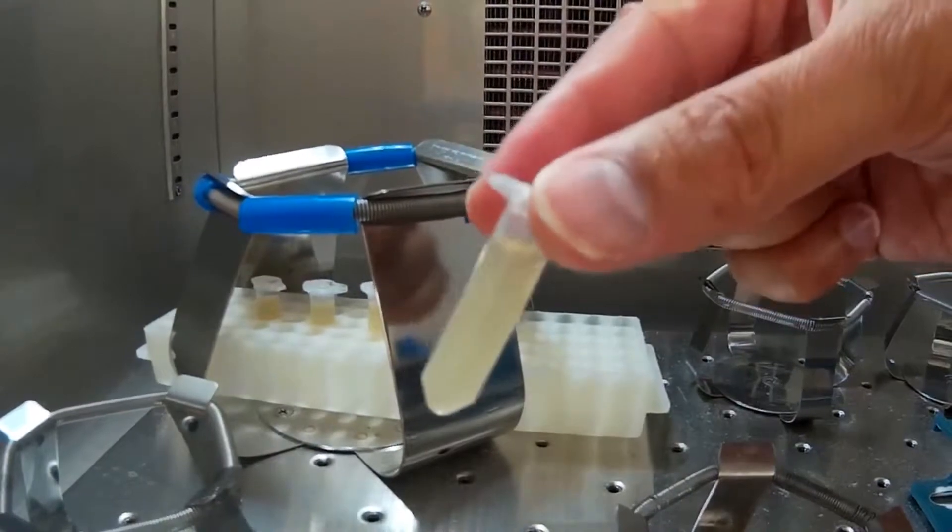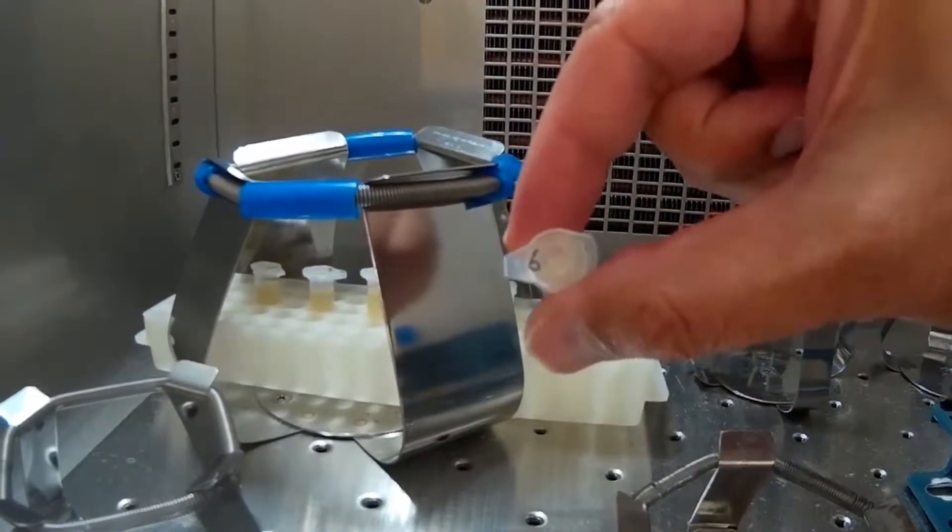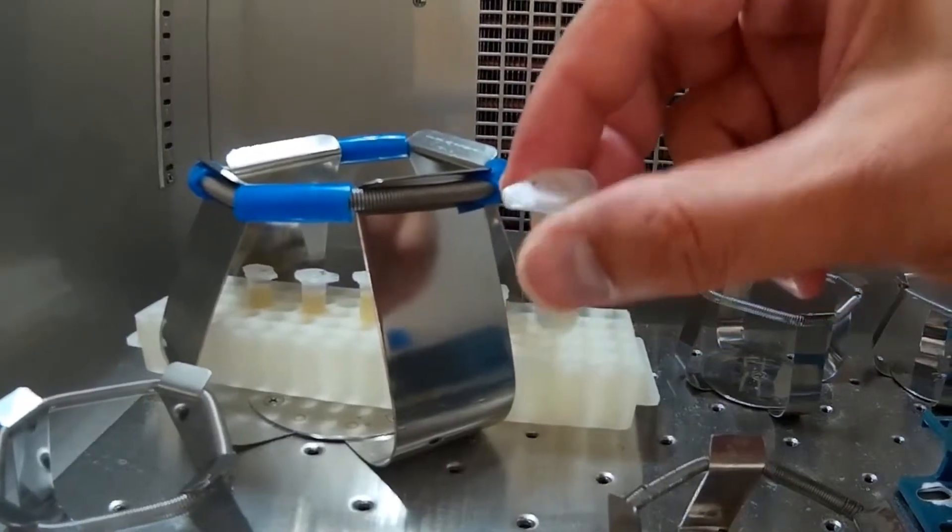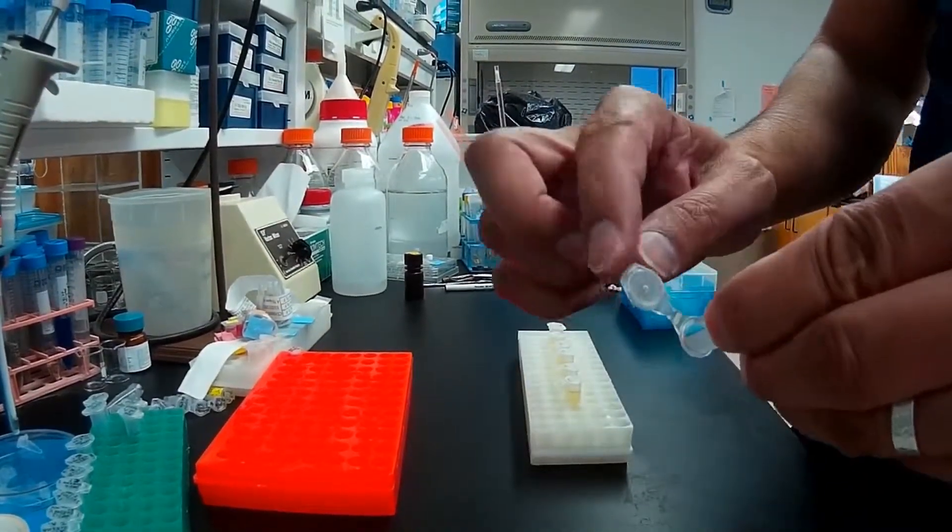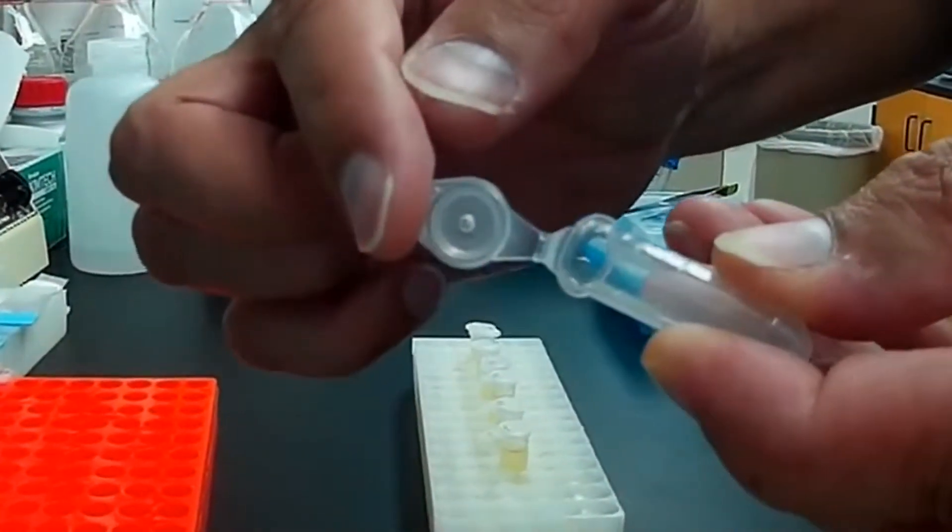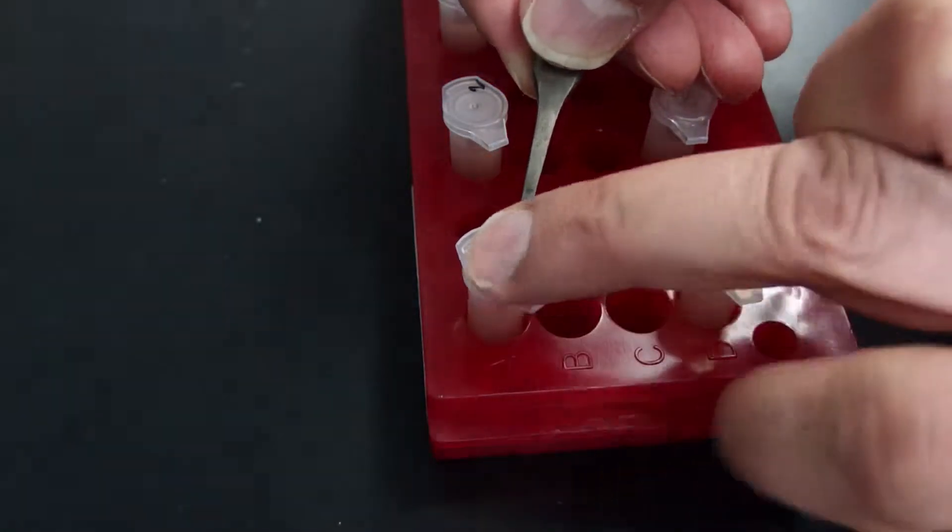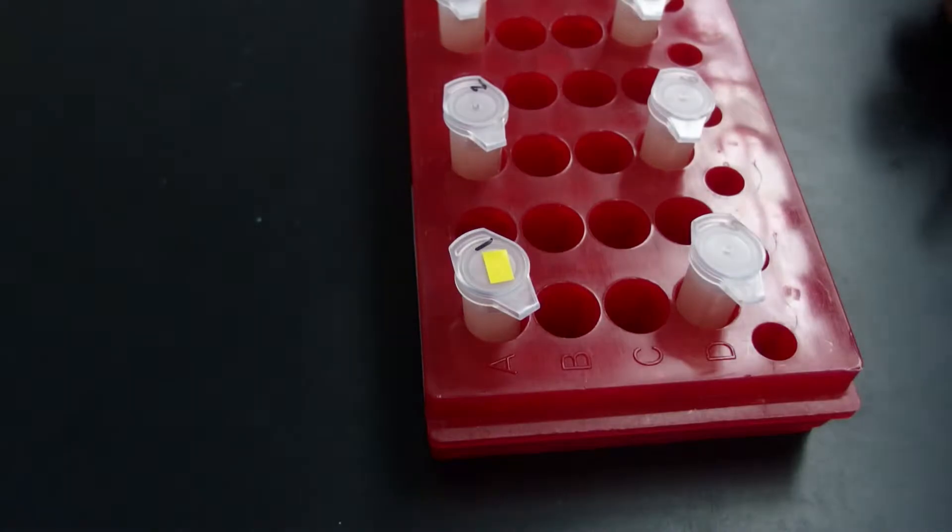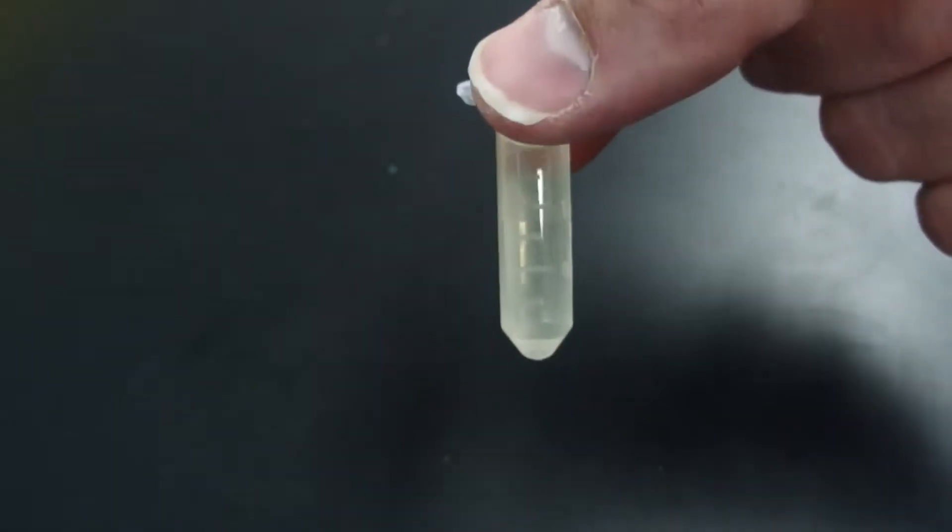To save time and plastics, cultures can be grown directly in two milliliter tubes with a small hole poked in the top. The hole can be poked in the lid with a 26 gauge needle. This allows the culture to breathe. Optionally, the hole can be sealed after the culture is grown with this little piece of tape. Don't worry about cross-contamination. Nothing grows in an un-inoculated tube even after one week.